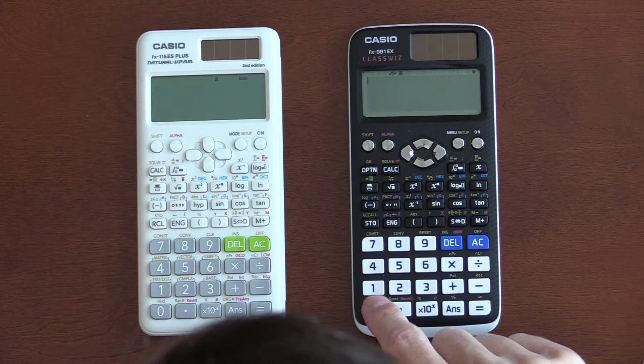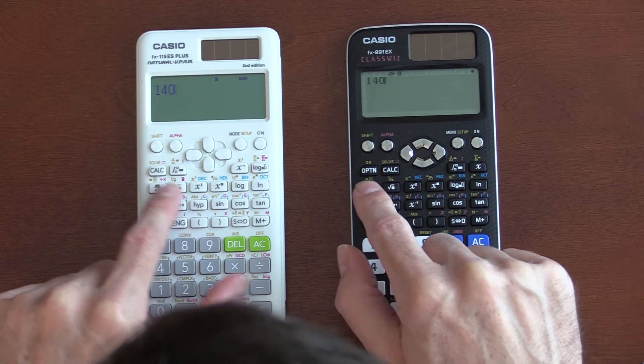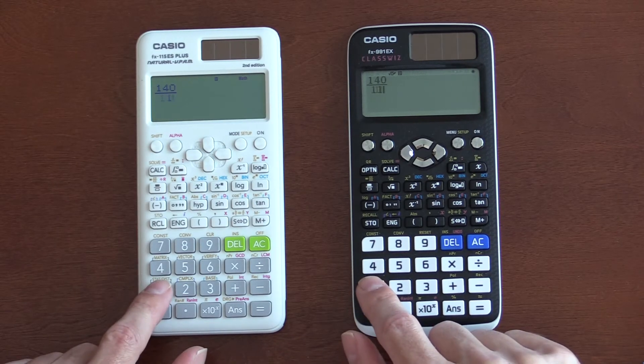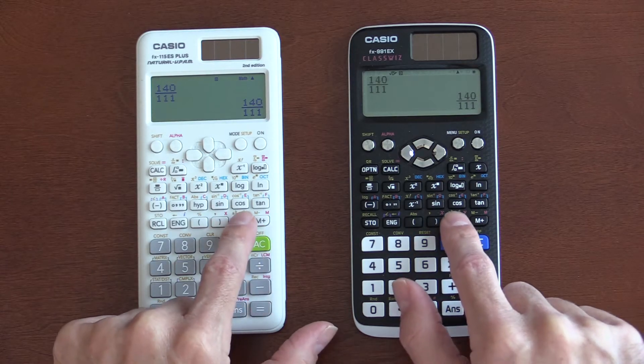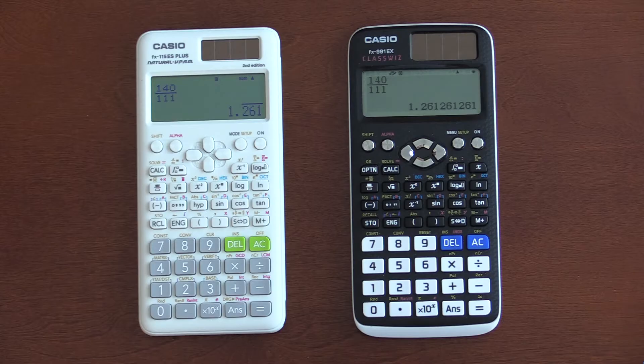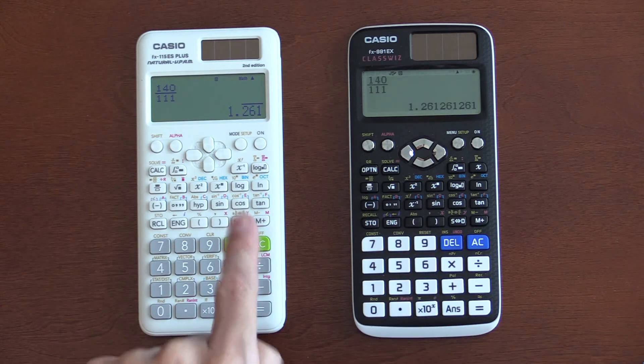If you type in 140 over 111 and hit equal, both calculators simplify the fraction initially. When you hit the S to D button, which I guess means symbolic to decimal, you can see the difference. On the ES,